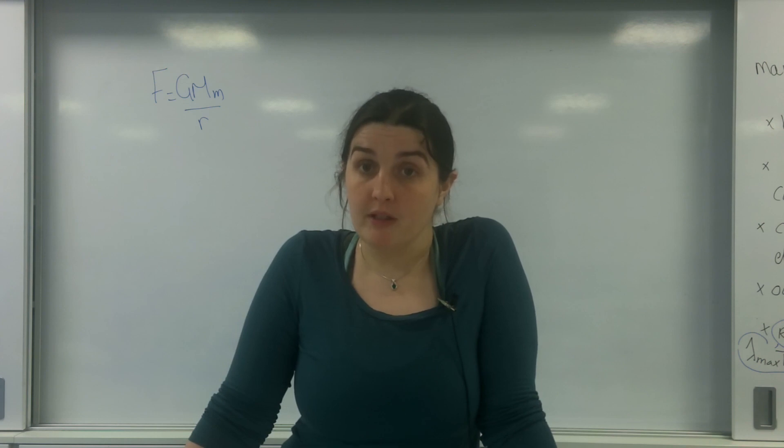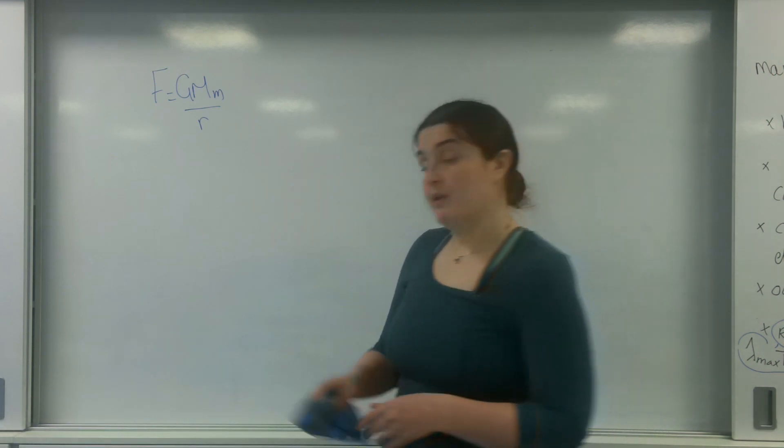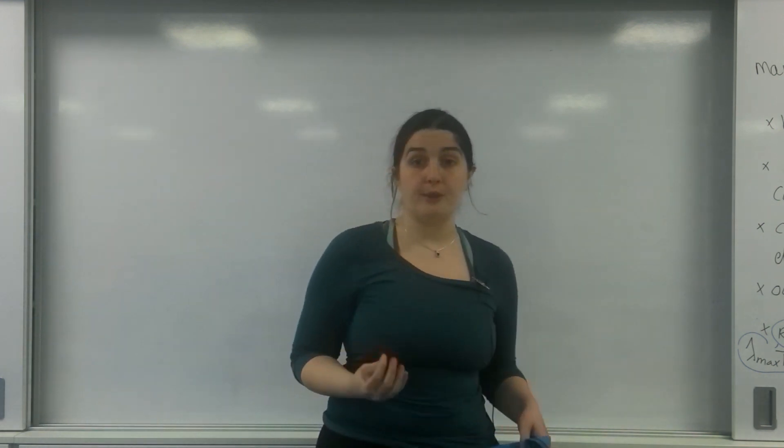It is a point where a star must shrink to, to mean that the escape velocity is the speed of light. So I'm going to derive the formula for you now, and it comes from gravitational fields.